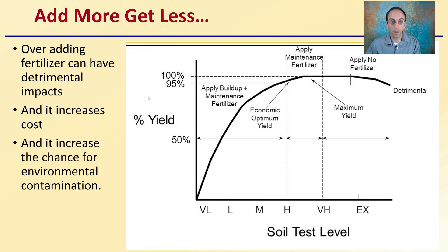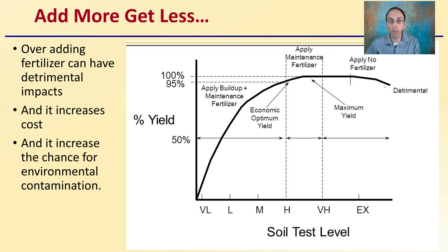Here we see the soil test levels and the theoretical yields — very low, low, medium, high — working through to that maximum yield. This is where we apply maintenance fertilizer, basically fertilizing plants at the rate of what the plants are removing. Prior to this stage, we're adding a little bit more than the plants can uptake because we're trying to build up that concentration in the soil. However, once we reach that point, we want to apply no additional fertilizer, because going beyond into the excessive range starts to cause detrimental effects, toxicity issues, and reductions in yield.